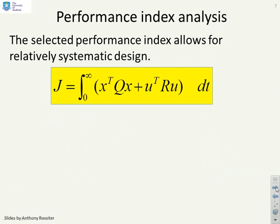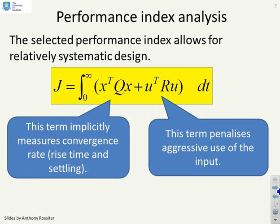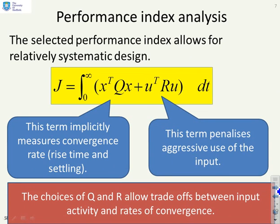This performance index allows for relatively systematic design because the x transpose Qx term implicitly measures convergence rate, rise time and settling, and the u transpose Ru term implicitly penalizes aggressive use of the input, which are two of the key performance characteristics you would be interested in.